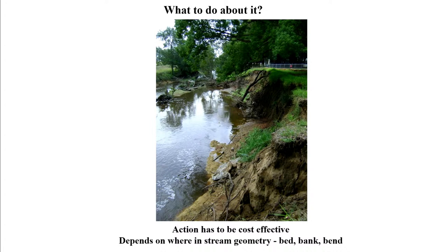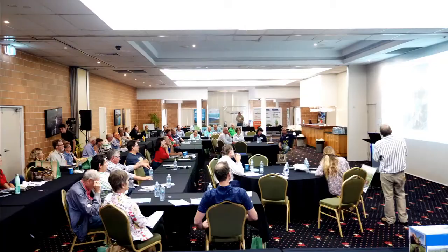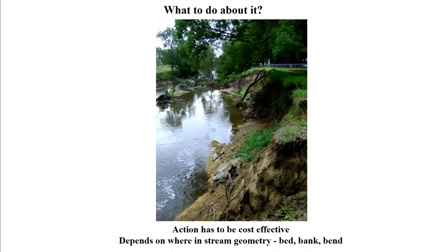What to do about it? Action has to be cost effective. It depends on where in the stream you are, the geometry of it, whether it's in the bed, the bank or the bend. That example at Peak Crossing School was where Warrow Creek was washing out the creek bank — they'd already moved the fence back a few metres trying to keep the kids in during school hours. Because it was a school, we spent a lot of money on that to stop the kids getting hurt.